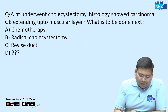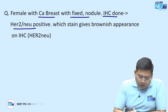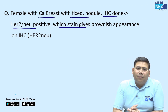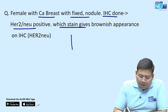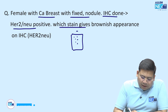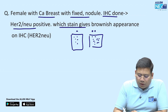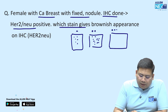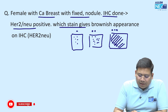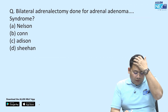A female patient with CA breast with a fixed nodule, immunohistochemistry done, HER2-new positive — which stain gives a brownish appearance on IHC? The question seems incomplete so I cannot fully comment. On IHC staining, the degree is assessed: positive is taken as 1+, moderately increased stain is 2+ or weak, and densely stained is strong or 3+. The answer is likely 2+ or 3+.